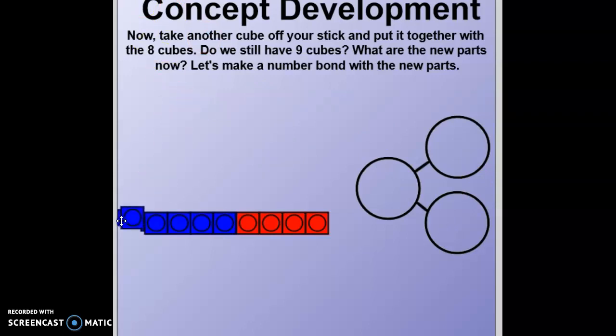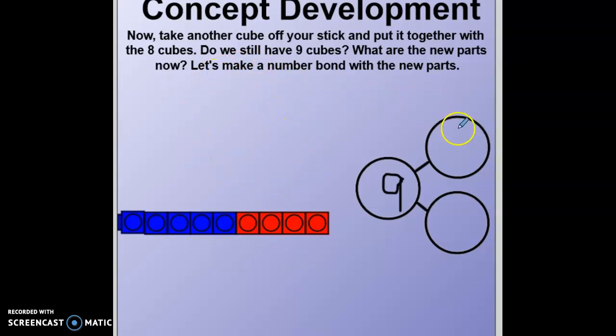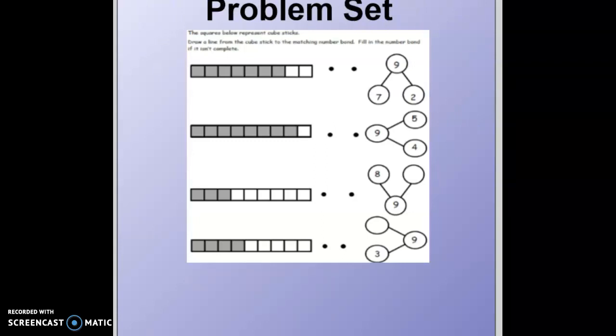Okay, here's our last one. This is a little bit tricky — we still have nine as the whole, but I want you to figure out the two parts. Is there anything up top? No — so we have zero. That shows we have nothing up top. And how many do we have below? One, two, three, four, five, six, seven, eight, nine. Go ahead and write your number sentence if you're doing the challenge, and then unpause me for your exit ticket. You did an amazing job, and I can't wait to see if you did those addition and subtraction challenges. Here is your problem set for the day — you are going to draw a line from the cube stick to the matching number bond. I will see you on Monday. Have a great weekend, Adams!